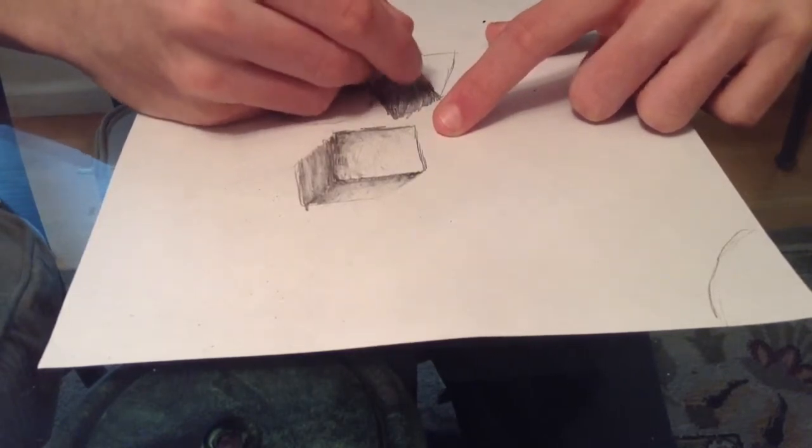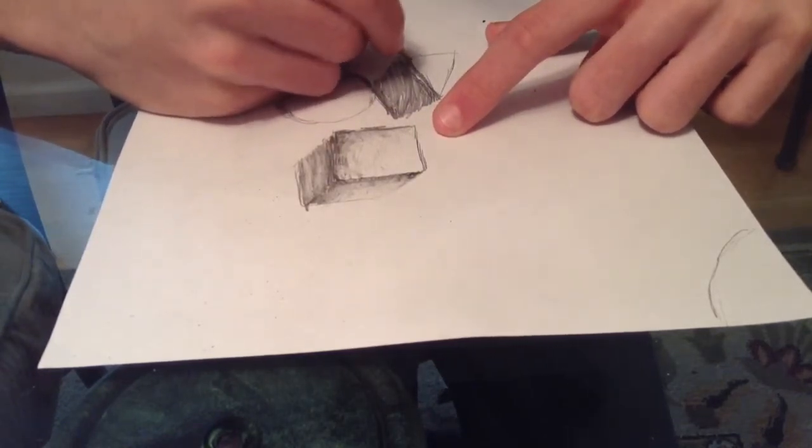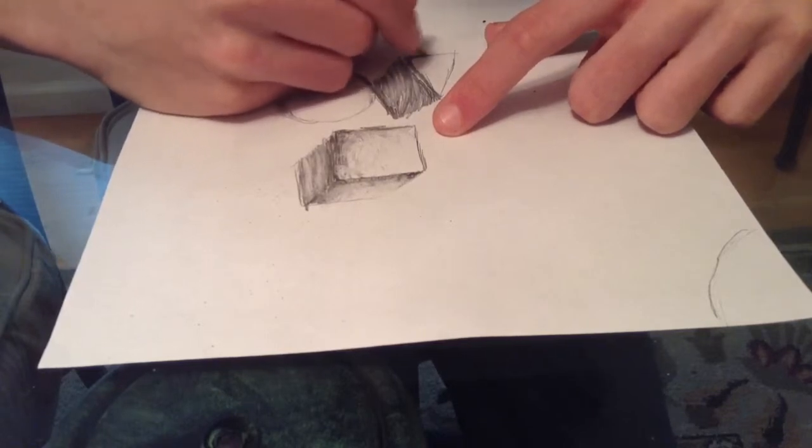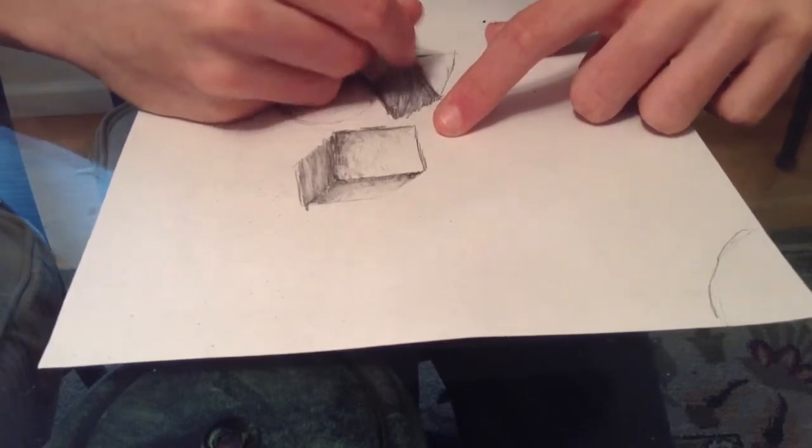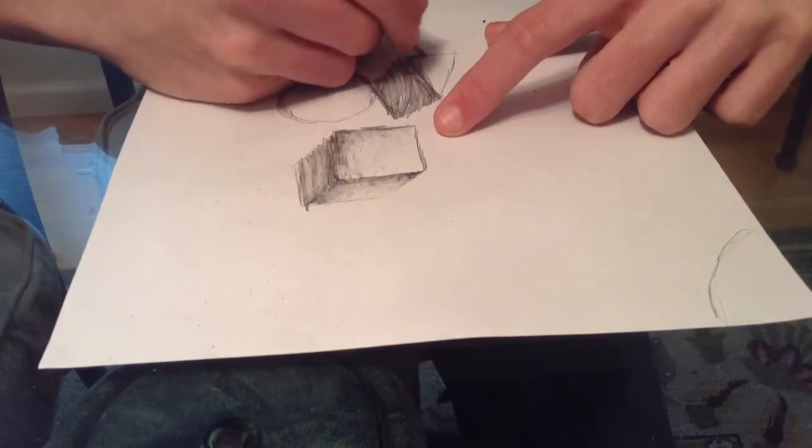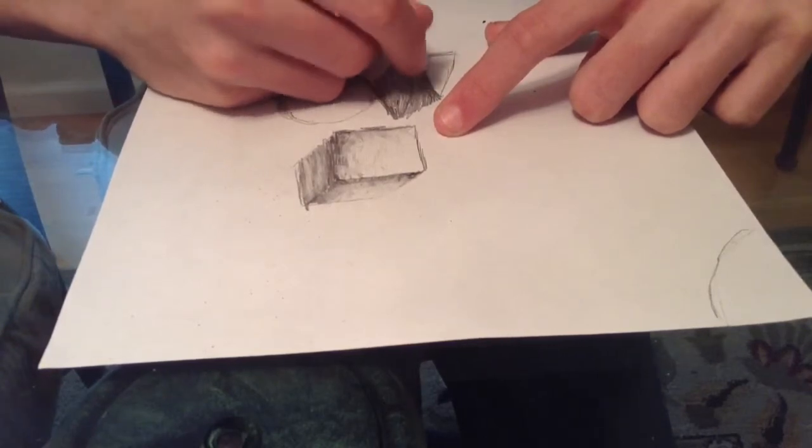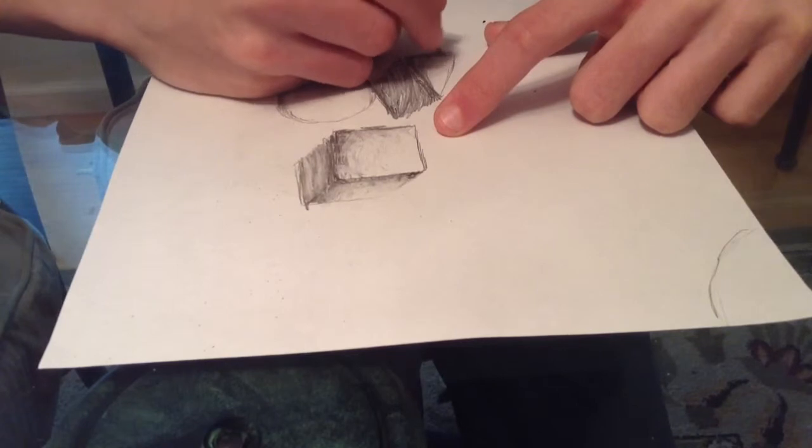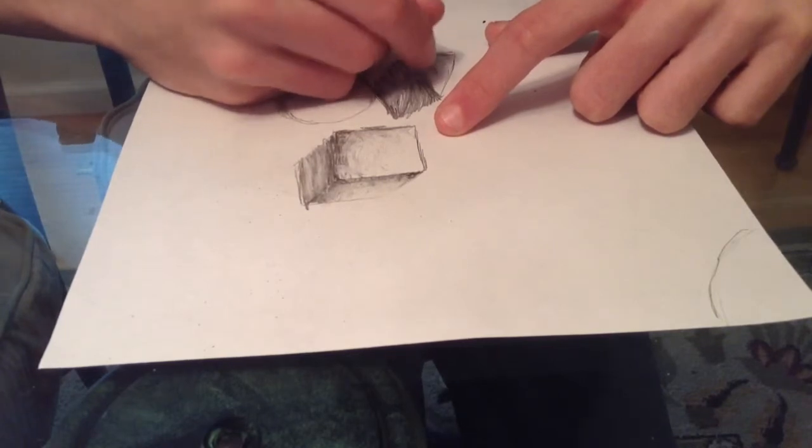This one goes fairly quickly because it's just a triangle and a flat plane. And since the plane was angled away from the light source, I didn't have to color it in fully.